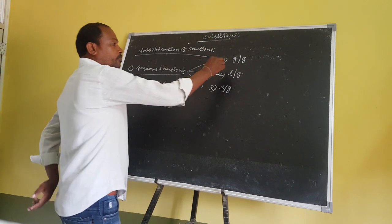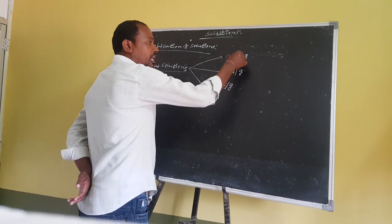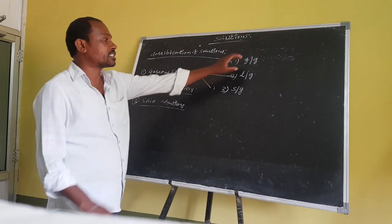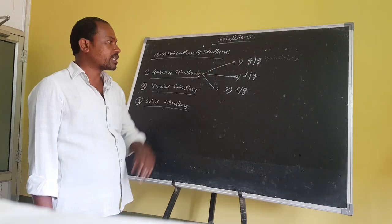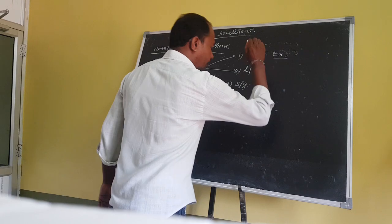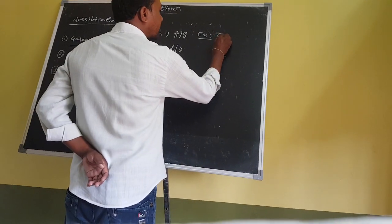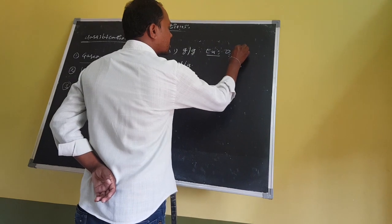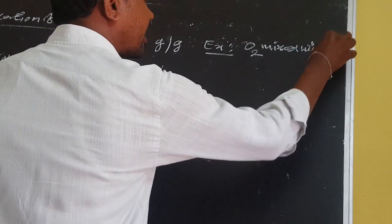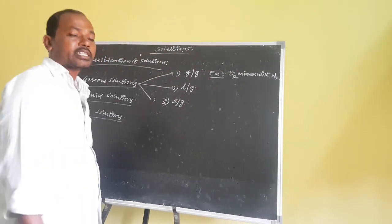First, gas-in-gas type solutions: in this type, gas always acts as a solvent and another gas acts as a solute. For example, oxygen mixed with nitrogen. This is the best example for gas-in-gas type solutions.